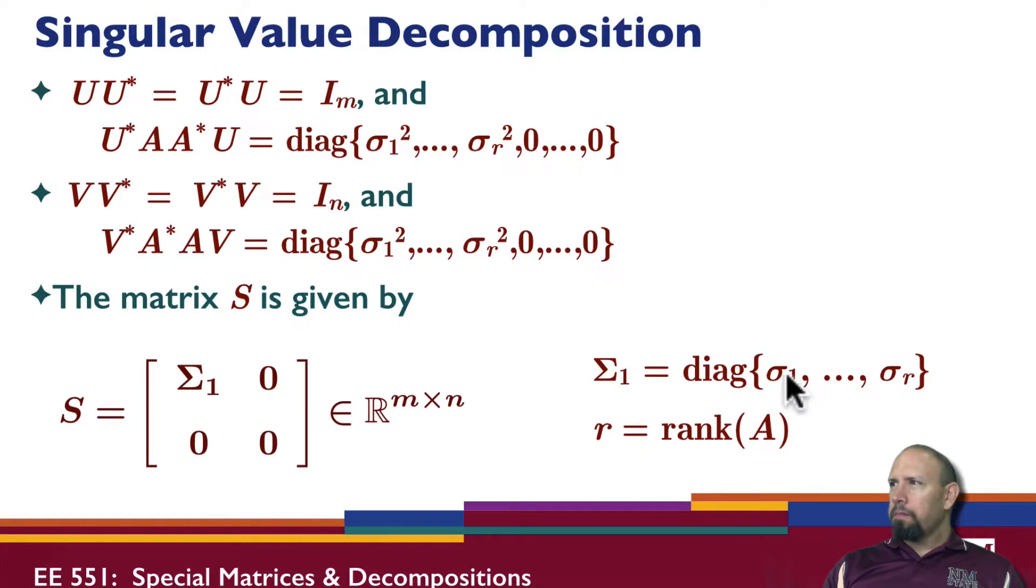So we can actually order the singular values, whereas the eigenvalues, for example, we can't order because they're complex. So you have a real part and you have an imaginary part. So how do you order complex things? That's not a simple problem. But the sigmas, the singular values, can be ordered because they're real and they're positive.